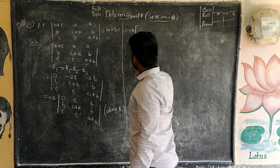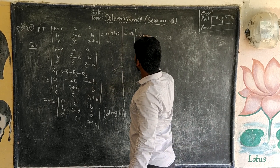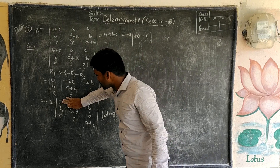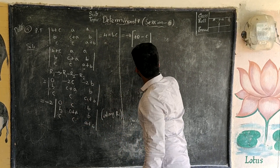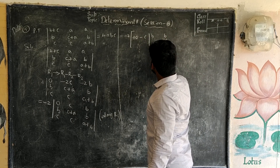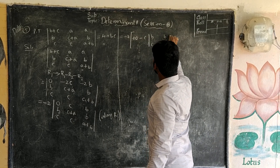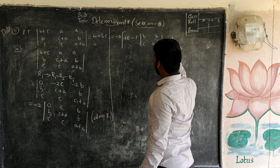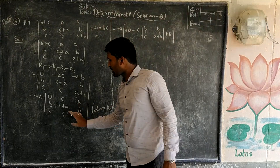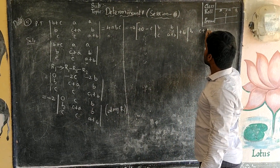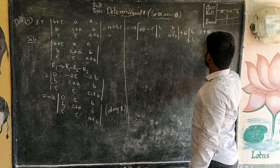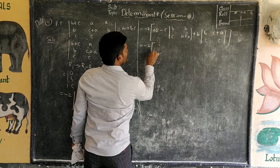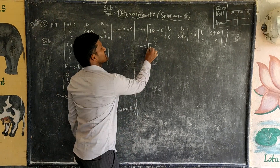In row 1, the common factor is minus 2. Taking minus 2 common from R1, what remains in row 1 is (0, C, B). The matrix becomes: minus 2 times determinant of (0, C, B / b, c+a, b / c, c, a+b).